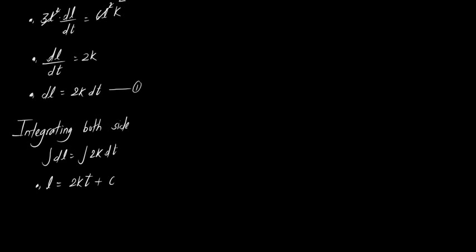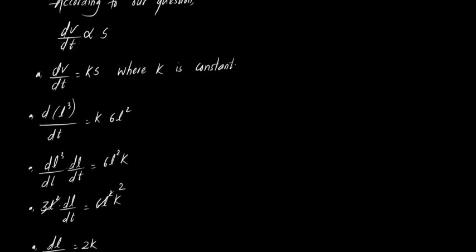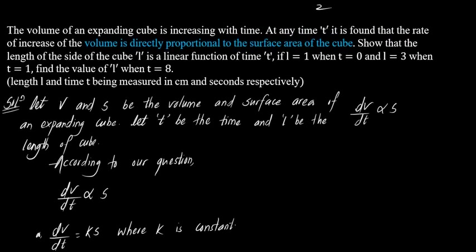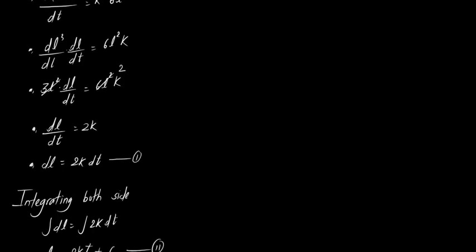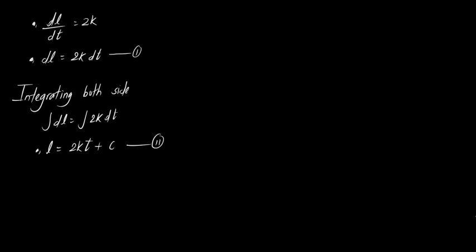This is the general solution. Now we apply the initial condition: when t = 0, L = 1. Substituting these values gives us the constant of integration C = 1, so L = 2kt + 1.